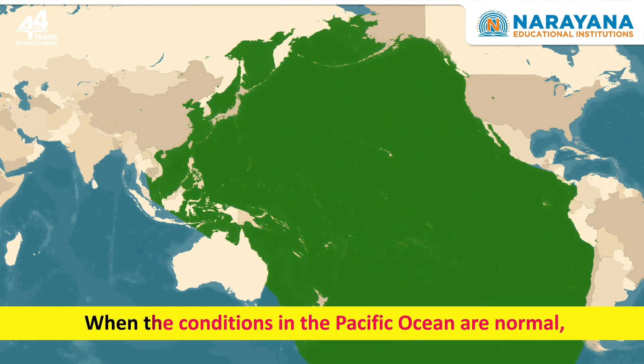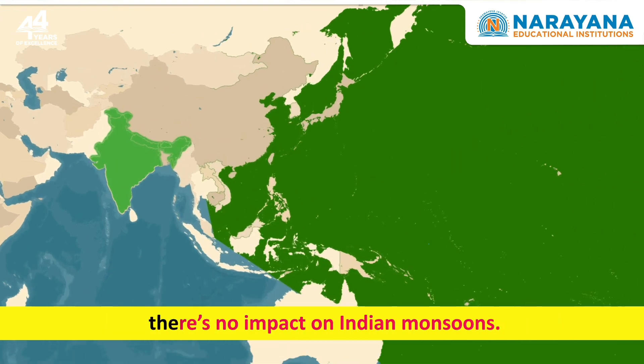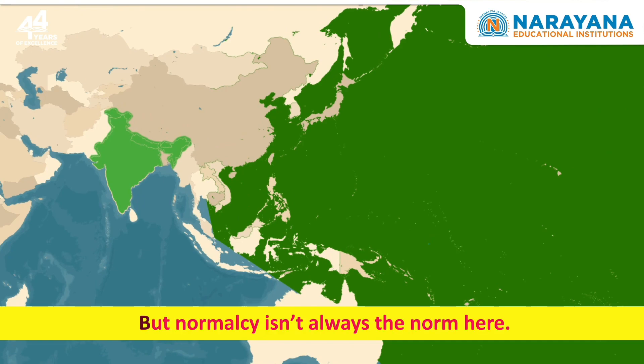Upwelling ensures the sea surface temperature is balanced, and this state generally denotes normal sea in the Pacific Ocean. When the conditions in the Pacific Ocean are normal, there's no impact on Indian monsoons. But normal sea isn't always the norm here.